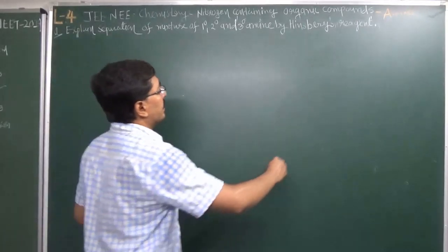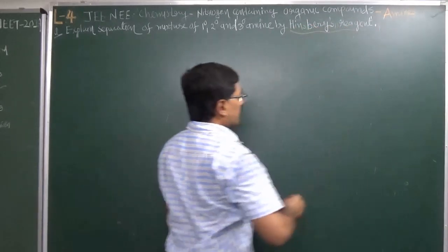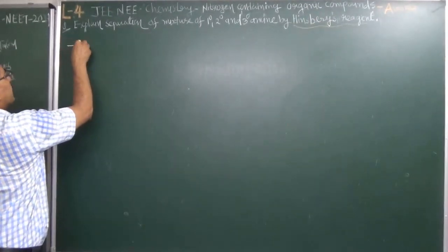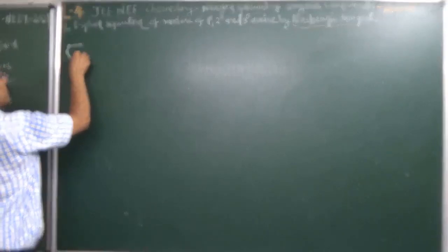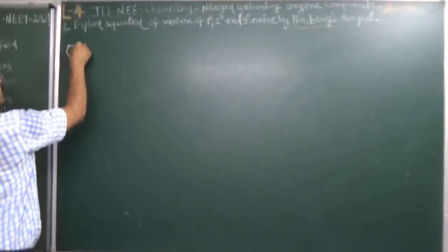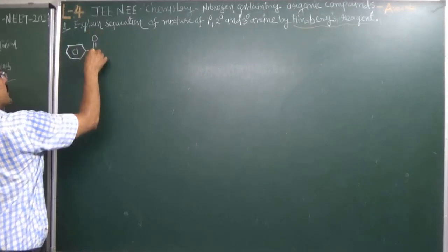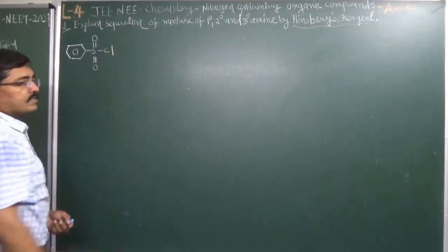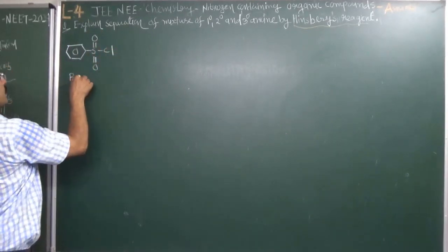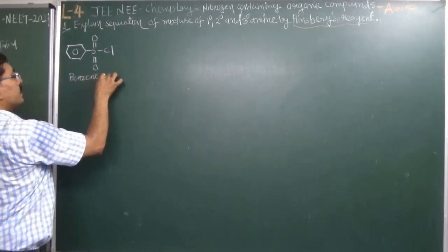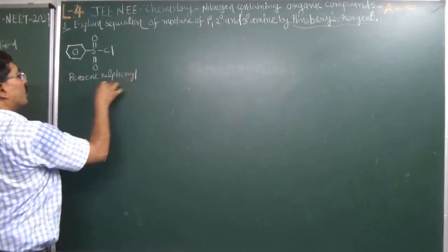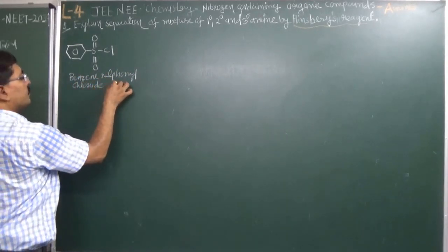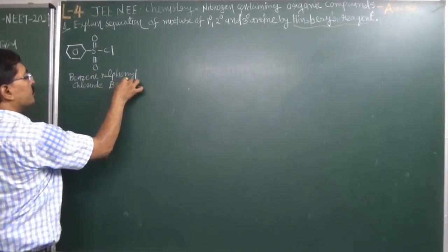The Hinsberg reagent is used for separation. The Hinsberg reagent is nothing but benzene sulfonyl chloride. It is chemically known as benzene sulfonyl chloride, and in short it is also written as BSC.